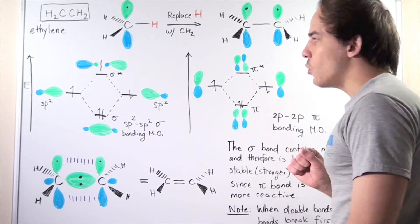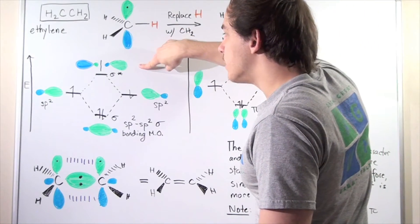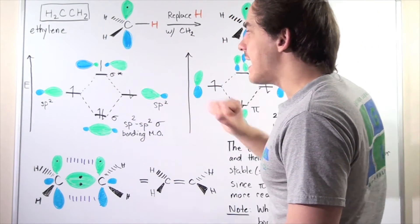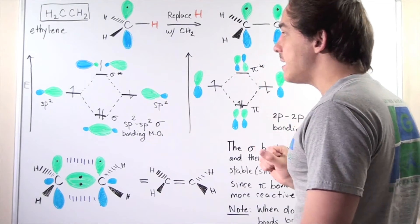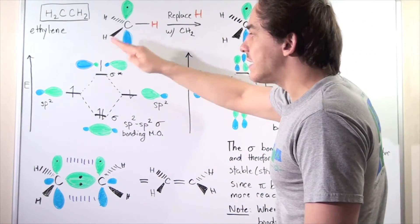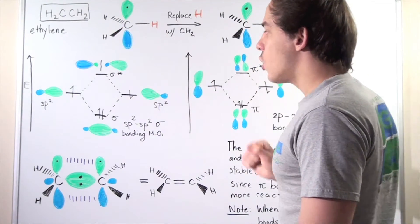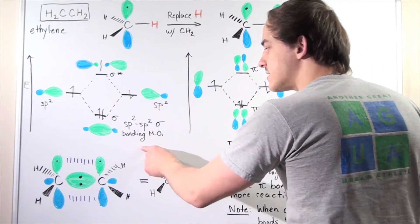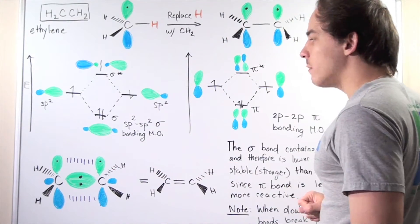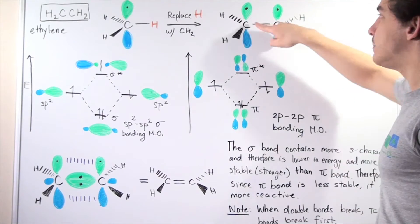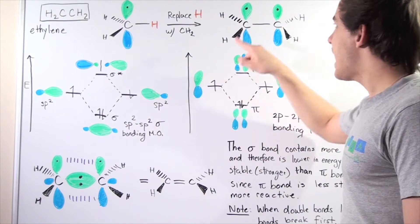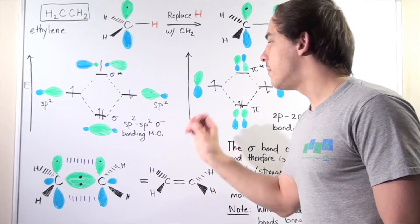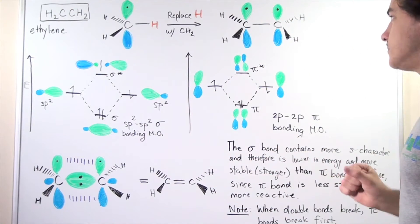We also have an anti-bonding molecular orbital, but since it's higher in energy and less stable, the electrons will not go into that orbital. So both electrons will be in the bonding molecular orbital. This covalent bond is therefore an sp2-sp2 sigma bonding molecular orbital.